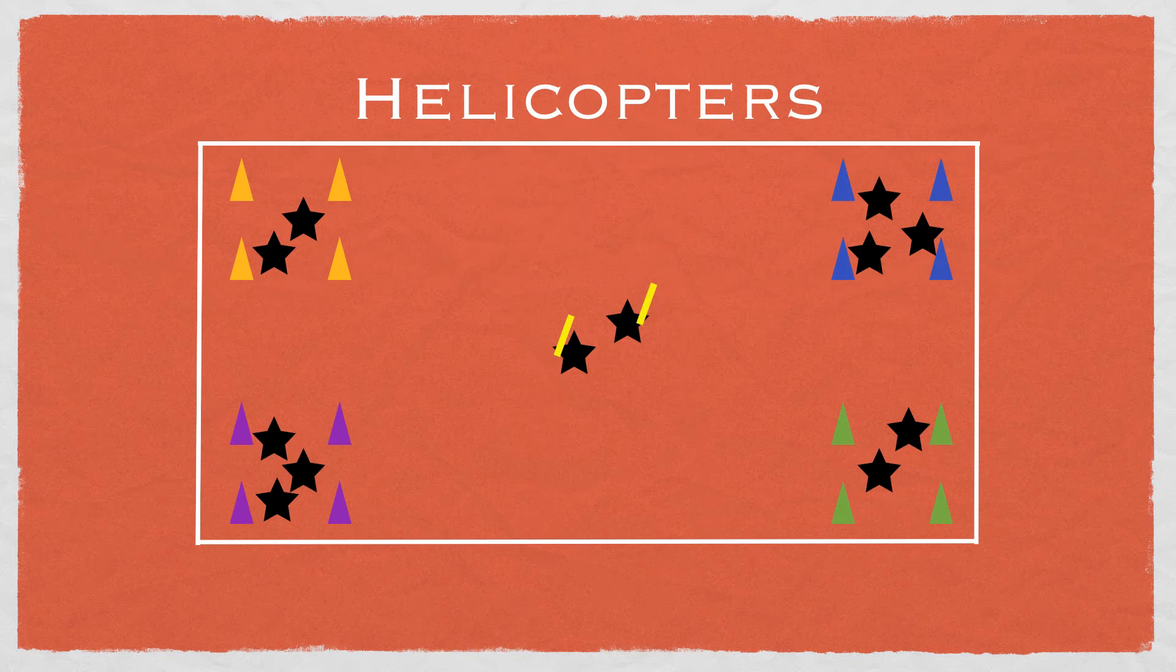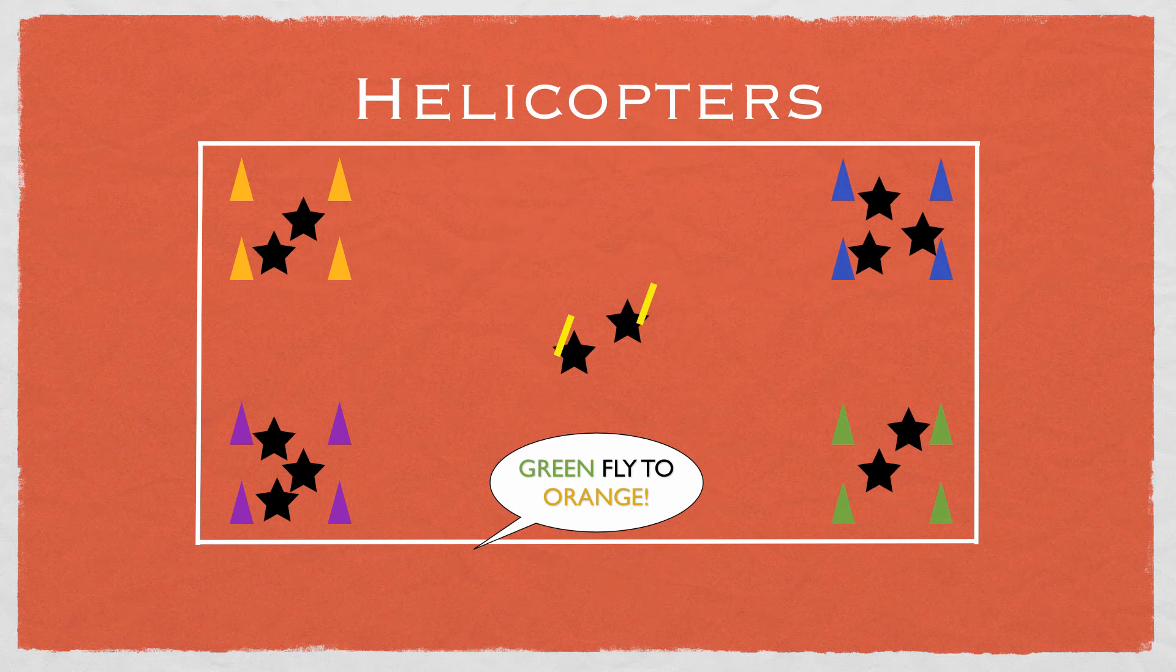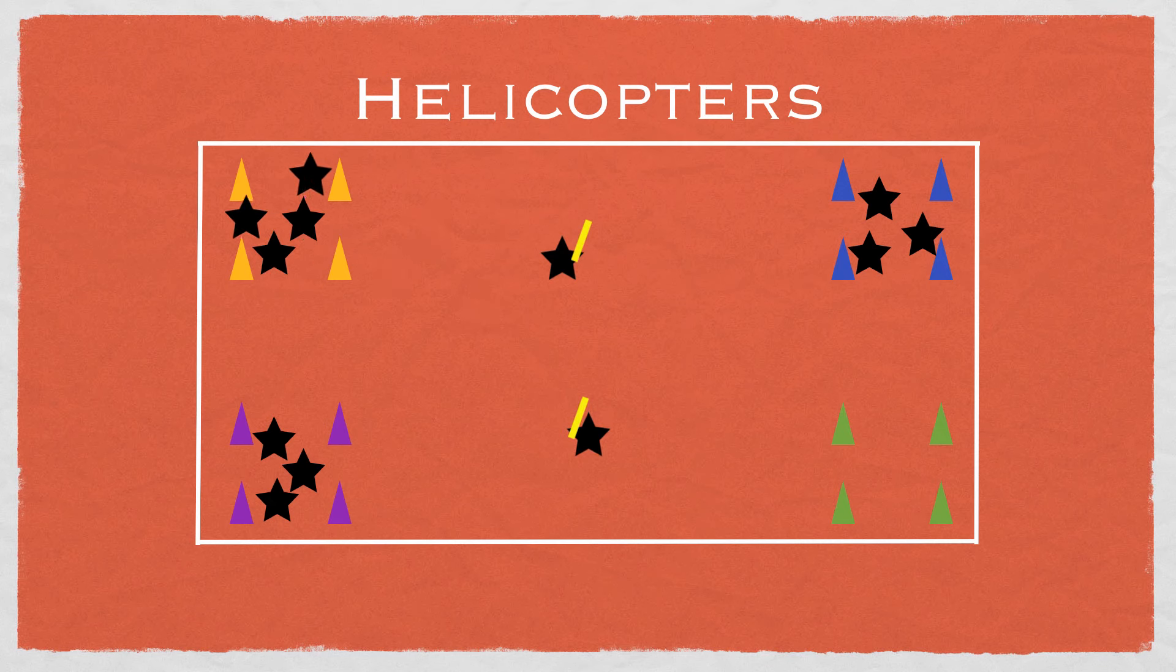As the teacher, you'll give students different directions. For example, call out 'green fly to orange.' The students in green will then try to fly safely to orange without getting tagged. We see those students have made it.